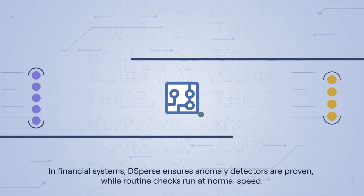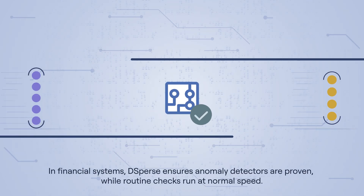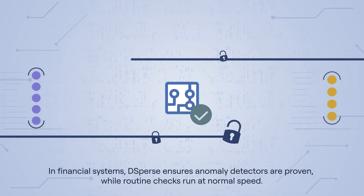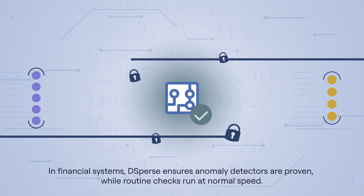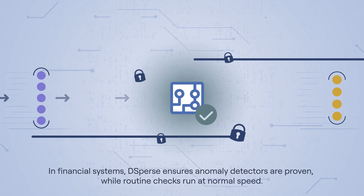In financial systems, D-Sperse ensures anomaly detectors are proven, while routine checks run at normal speed.